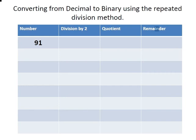I have set up a table here. In the first column I have 'number' — I'm going to explain what that is shortly. The next column is 'division by two', so whatever number we have we're going to divide it by two. We're also going to set up columns for the quotient and remainder. By way of demonstration I think I should get straight into it.